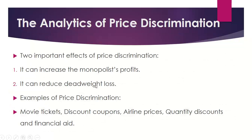There are two important effects of price discrimination: it can increase the monopolist's profit, and it can reduce deadweight loss. Examples of price discrimination include movie tickets, discount coupons, airline prices, quantity discounts, and financial aid. All these examples fall under the category of price discrimination.